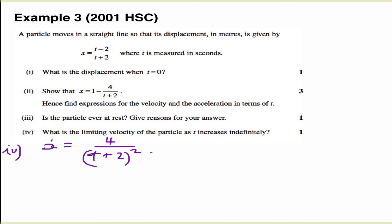In the previous part we showed that the velocity function is equal to 4 on t plus 2 squared. And part 4 asks us, what is the limiting velocity as t increases infinitely? As t tends to infinity, what happens to our velocity function? Well we have 4 over a really, really big number. So anything over a really big number is close to 0. So the limiting velocity of this function would be 0.